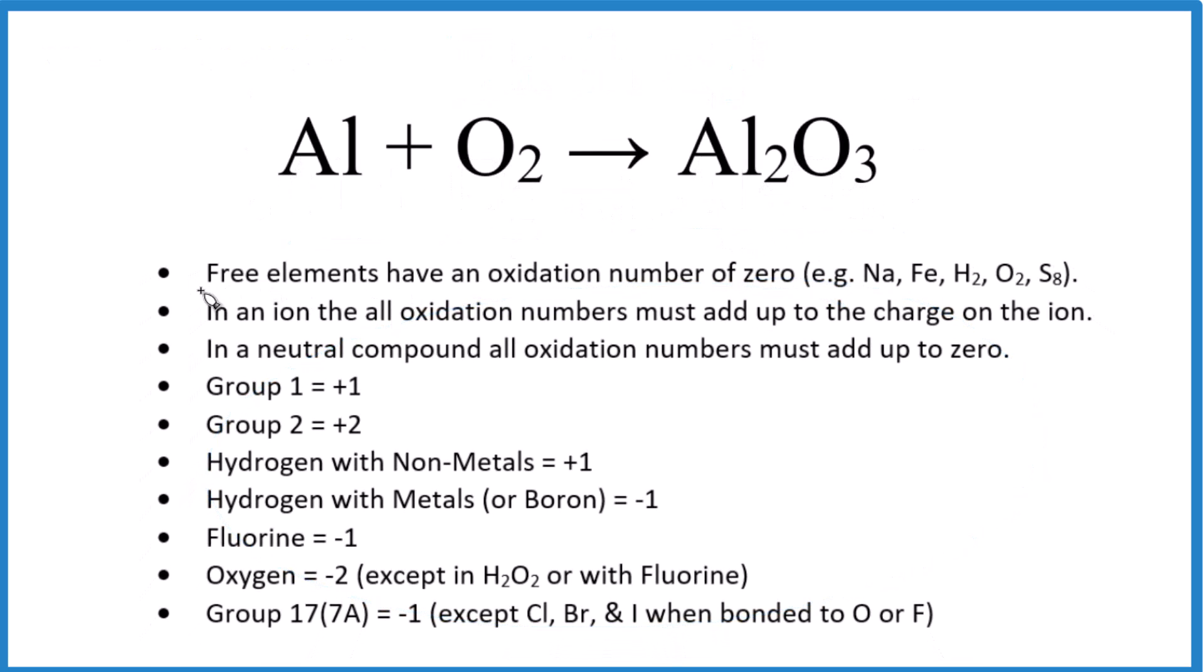Let's give it a try. So free elements, elements only of one type of atom, like Na or H2 or O2, their oxidation numbers are zero. So aluminum is zero, and then O2, oxidation number, that's going to be zero.